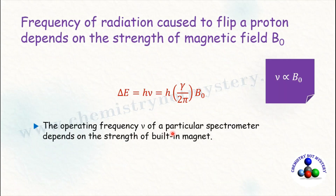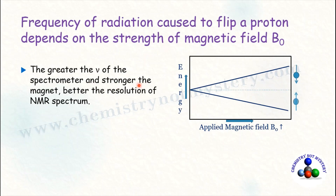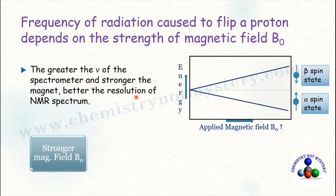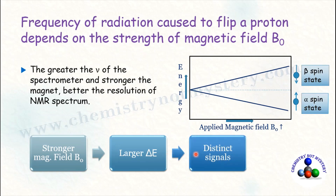The operating frequency of a particular spectrometer depends on the strength of its built-in magnet. Greater operating frequency means a stronger magnet and better resolution of the NMR spectrum. When we use a stronger magnetic field, it causes a larger energy difference between alpha and beta spin states, which gives distinct signals for each proton and better resolution.